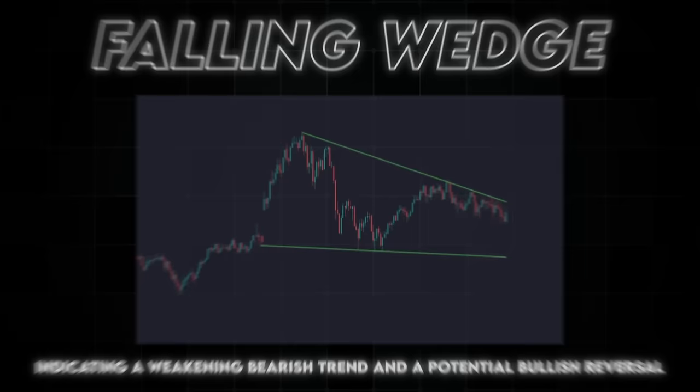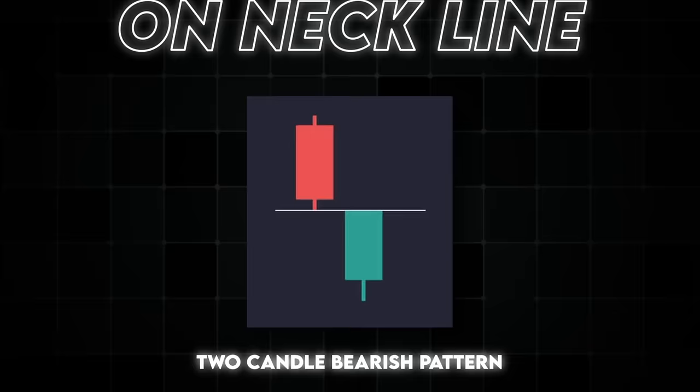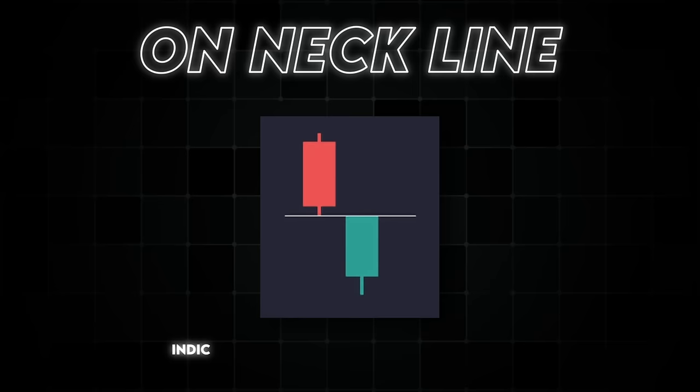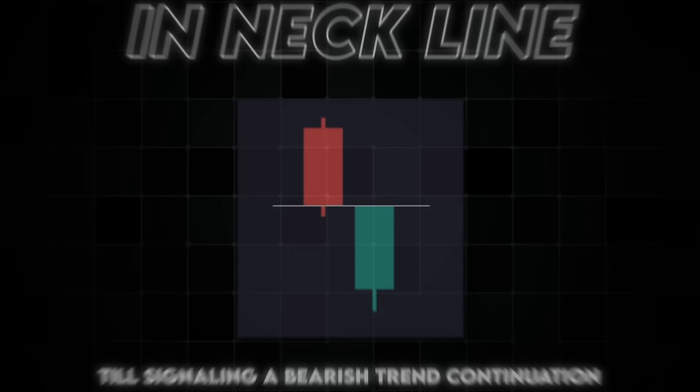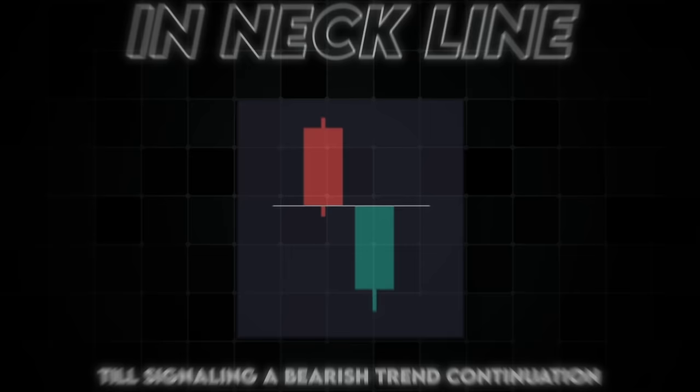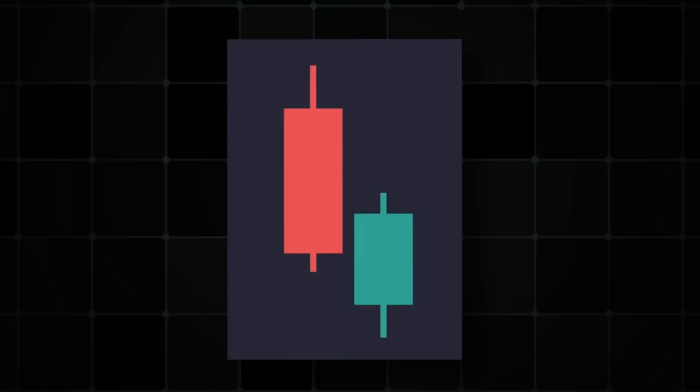Next we have the on-neck and in-neck patterns. An on-neck line is a two-candle bearish pattern in a downward trend where the second candle opens with a gap down but closes near the low of the previous candle, indicating continuation of the bearish trend. The in-neck is similar but the second candle closes slightly into the body of the previous candle, still signaling bearish continuation. Then we have a thrusting line — a bearish two-candle pattern in a downtrend where the second candle opens within the body of the first but closes more than halfway into it, reinforcing the continuation of the bearish trend.